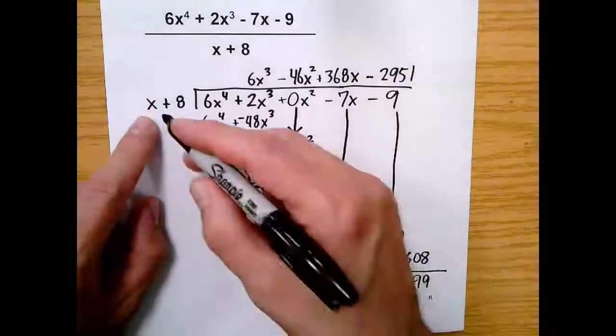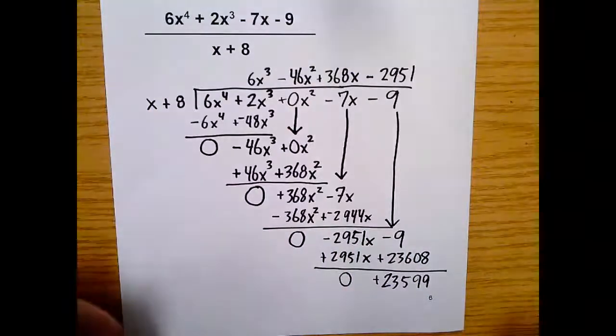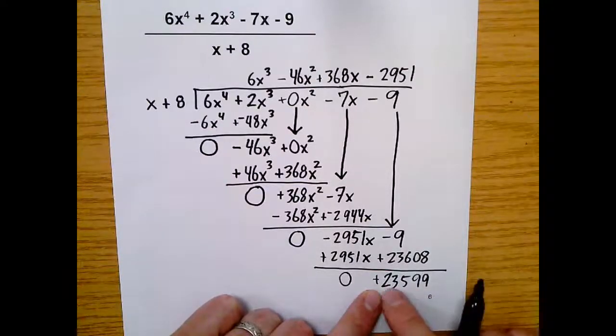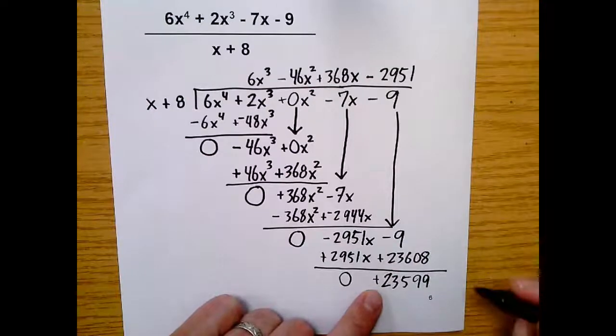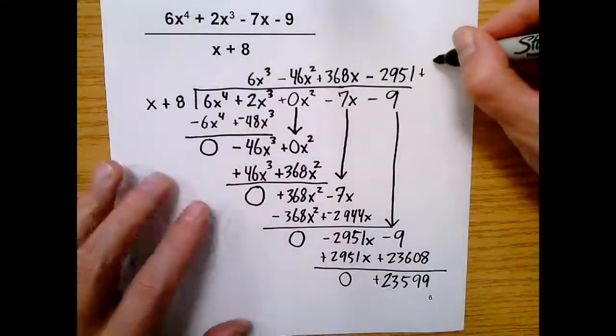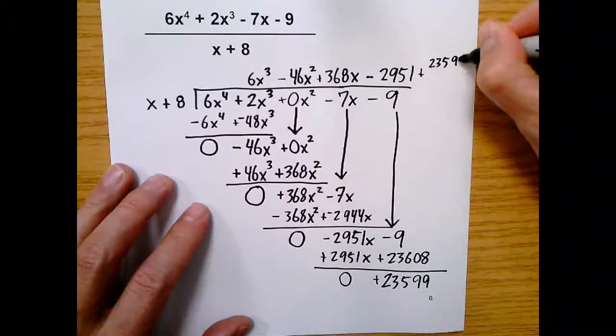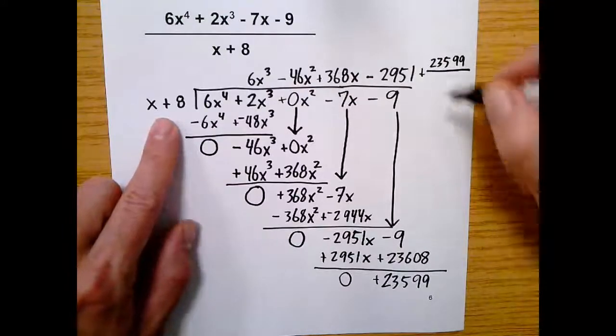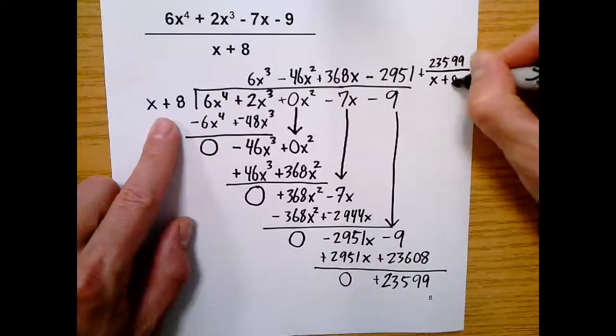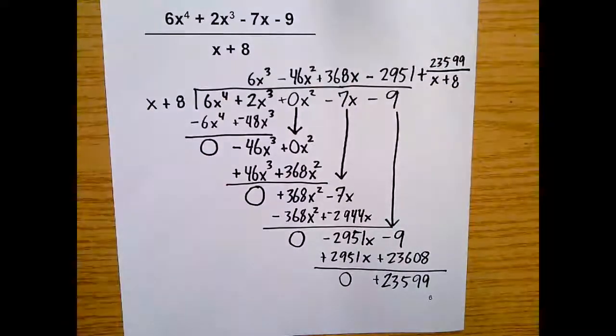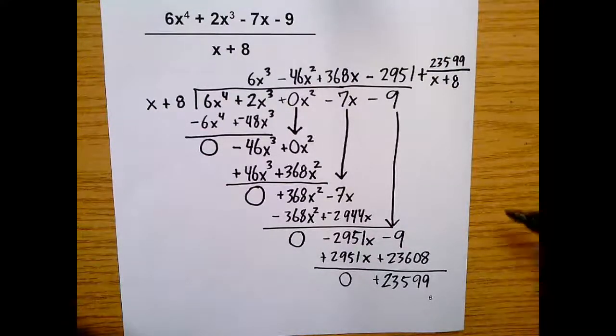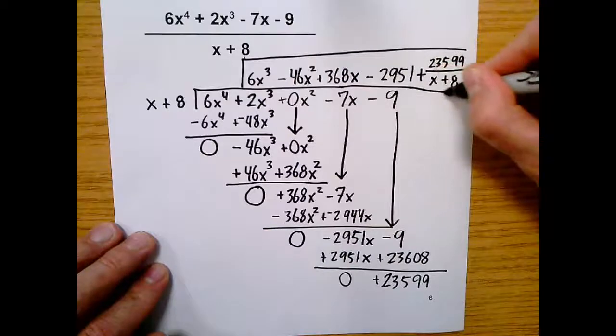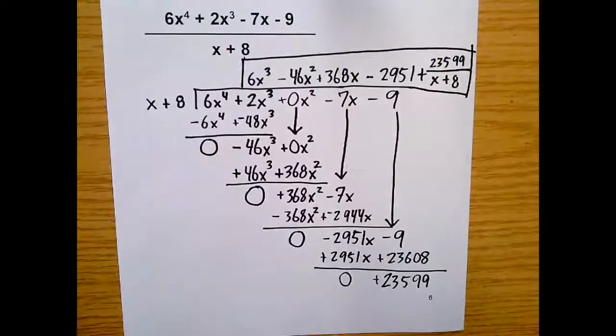Because this x to the 1 has the highest degree, because there's no variable here, we actually stop. And then we just acknowledge that this bit left here is our remainder. That will be the numerator of a fraction at the end. So I write plus 23,599. And then the denominator of my remainder is just x plus 8. And that is it. Look at all that great work you just did. You should be proud of this. Good job. So frame it up so everyone knows great work you did.